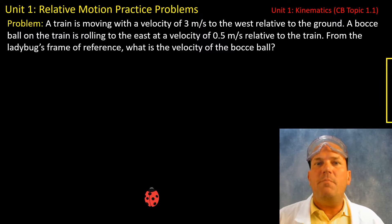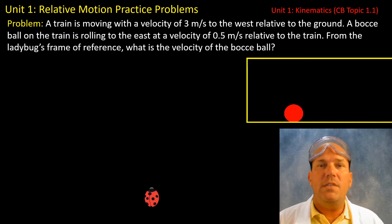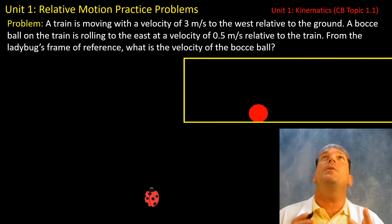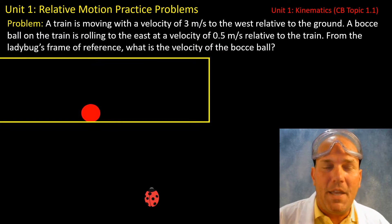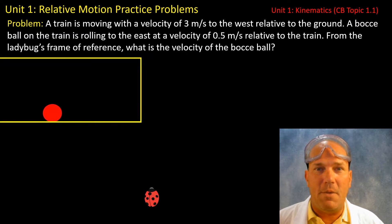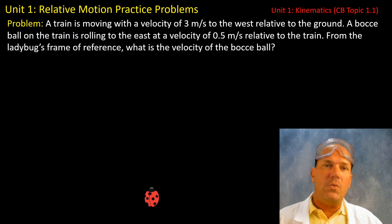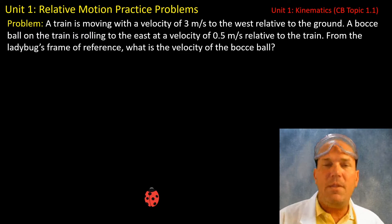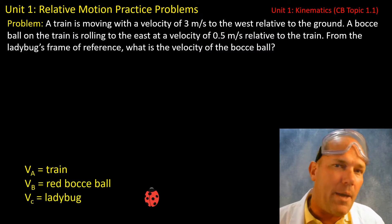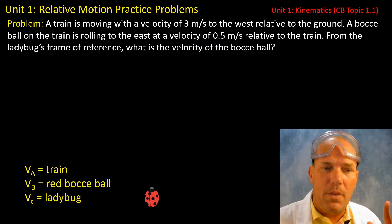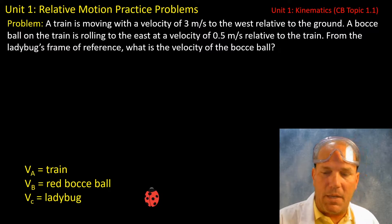Just above my head you're going to see a train coming, and you can see the bocce ball moving to the east while the train moves to the west, and our little ladybug at the bottom of the screen is observing this. To describe this motion, first thing I would do is get our three objects set up: the train, the bocce ball, and the ladybug.